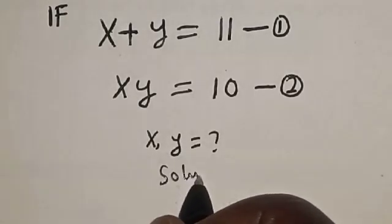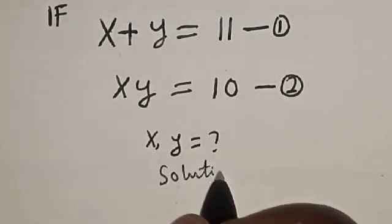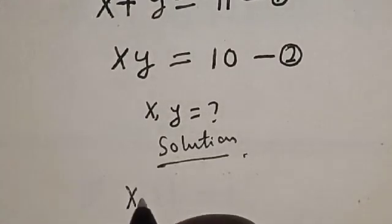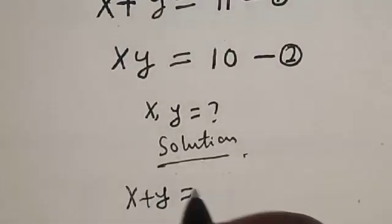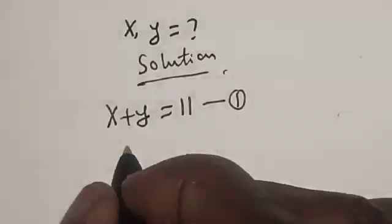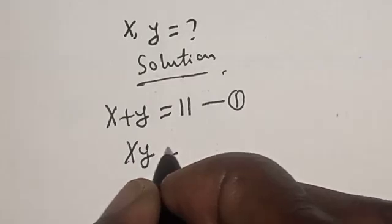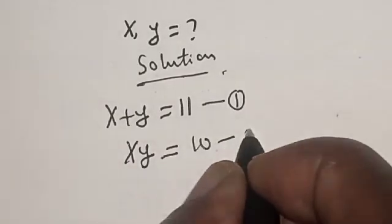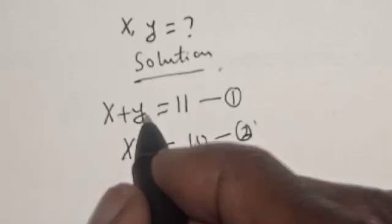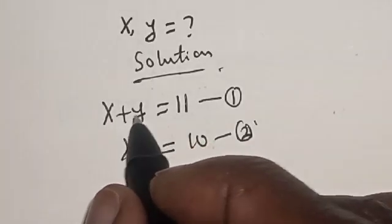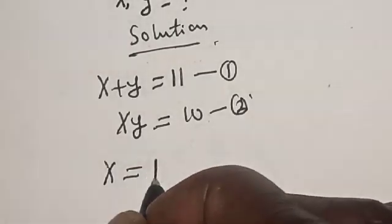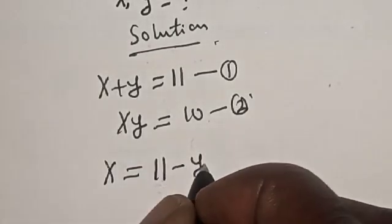Solution. So, we have x plus y is equal to 11. This is our equation 1. And xy is equal to 10. This is equation 2. And from equation 1, let's make x the subject of the formula. That is, x is equal to 11 minus y.